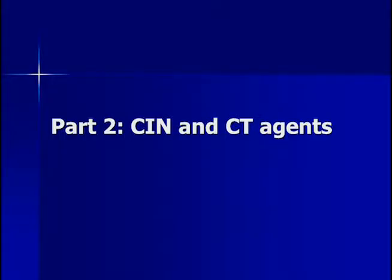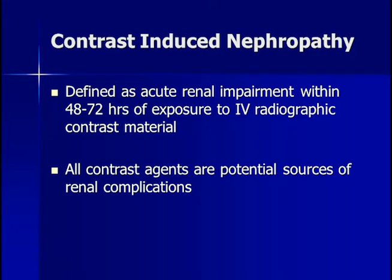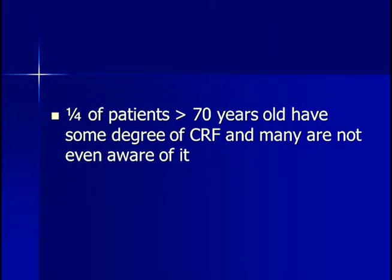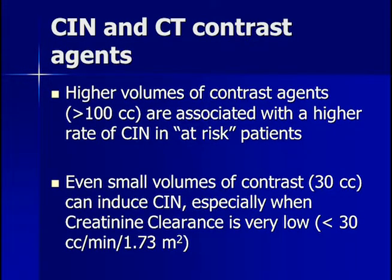Part two is contrast-induced nephropathy and CT agents. Contrast-induced nephropathy is defined as acute renal impairment occurring within 48 to 72 hours after exposure to intravenous radiographic contrast material. All contrast agents are potential sources of renal complications, as shown by cell deformation and osmolality changes. Approximately one-quarter of all patients over 70 have some degree of chronic renal failure, and many are not even aware of it. The higher the volume of contrast agent used, the higher the risk of CIN in at-risk patients. Even small volumes can cause CIN, especially when creatinine clearance is very low.